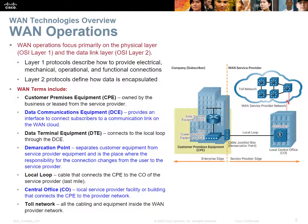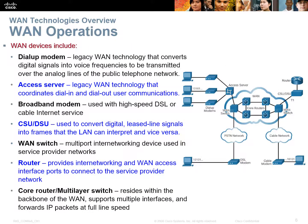The demarcation point is where the ISP's responsibilities end and your responsibilities begin. The local loop is the link between you and your ISP or the ISP central office. In this example we've also got the toll network, which is what we're actually paying for. Typically the demarcation is a point in your building's run room where the ISP brings in their cabling, and from that point on everything is under your control.